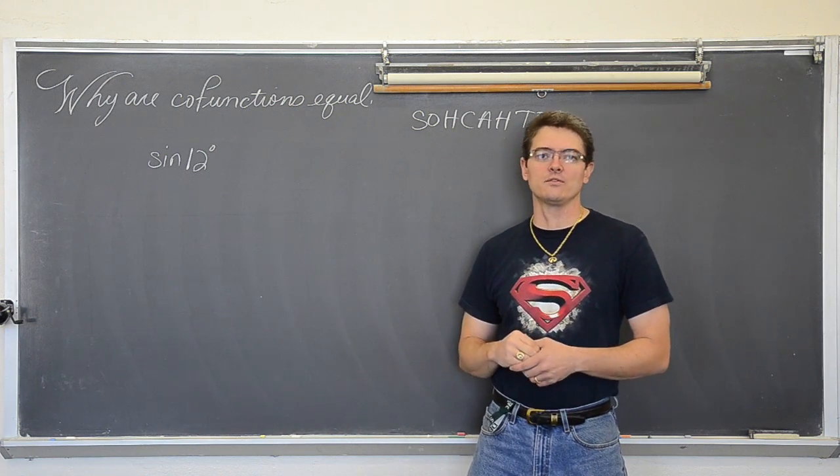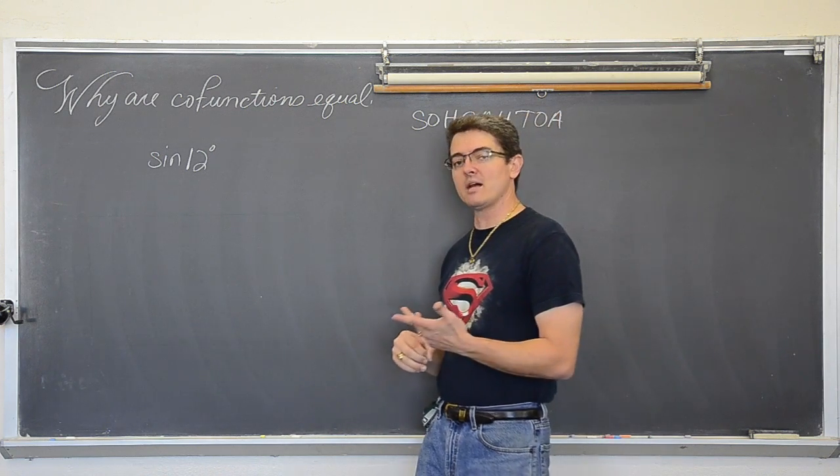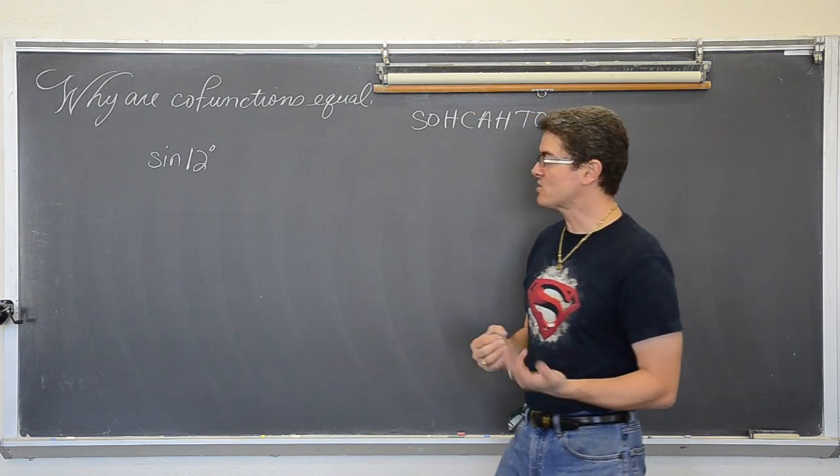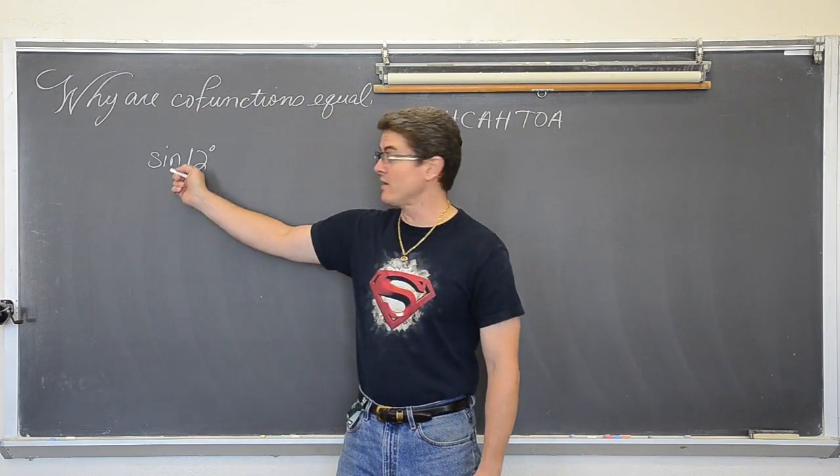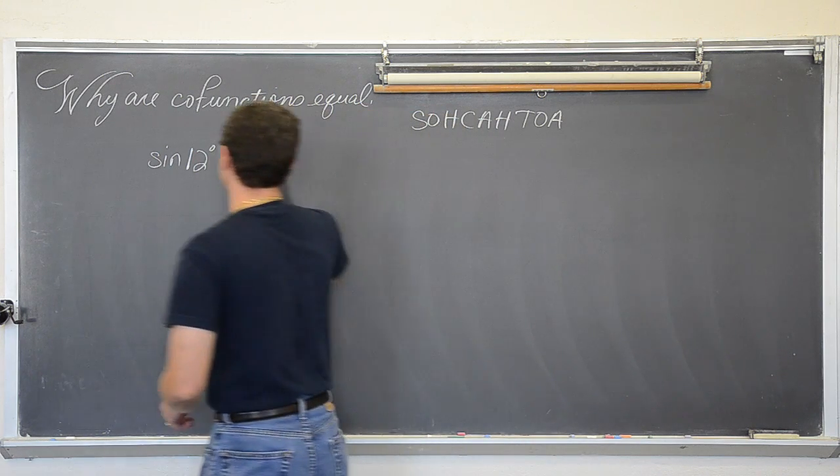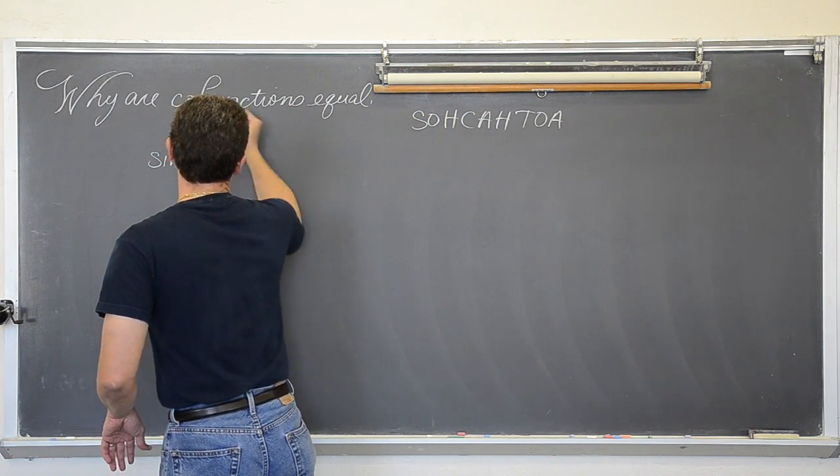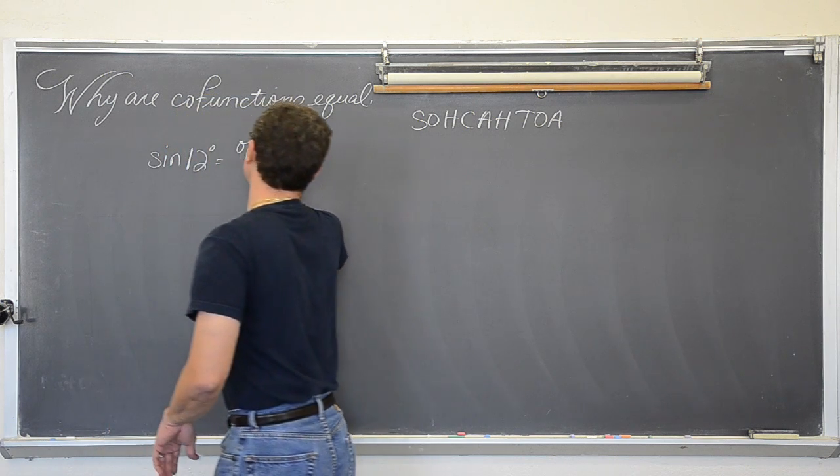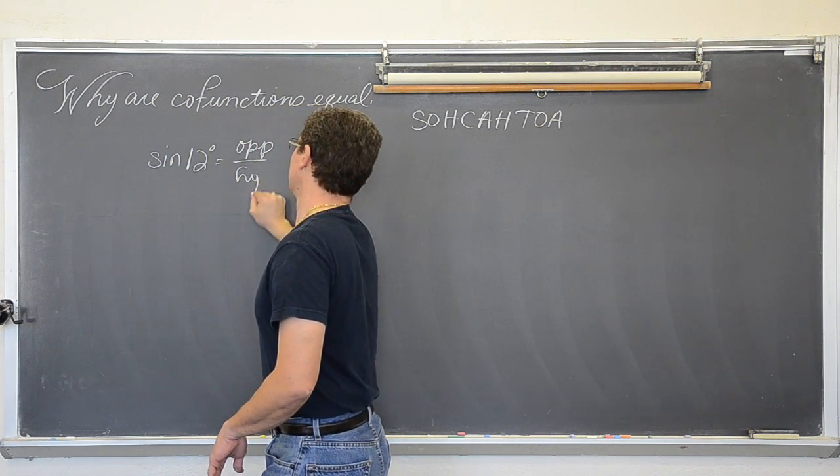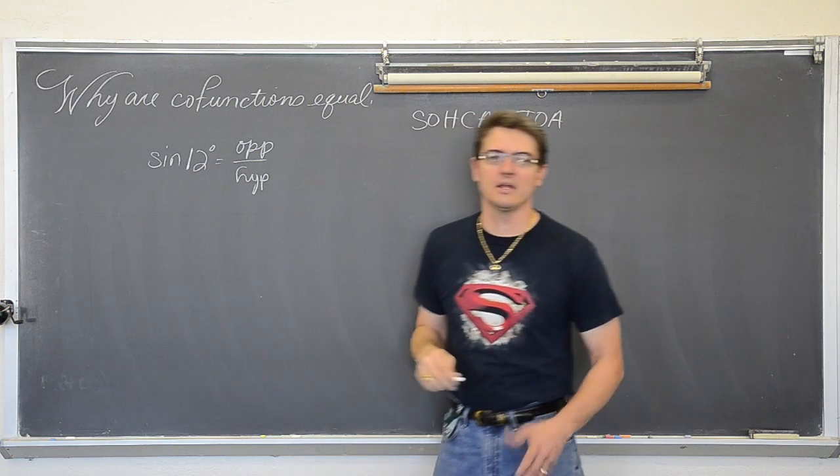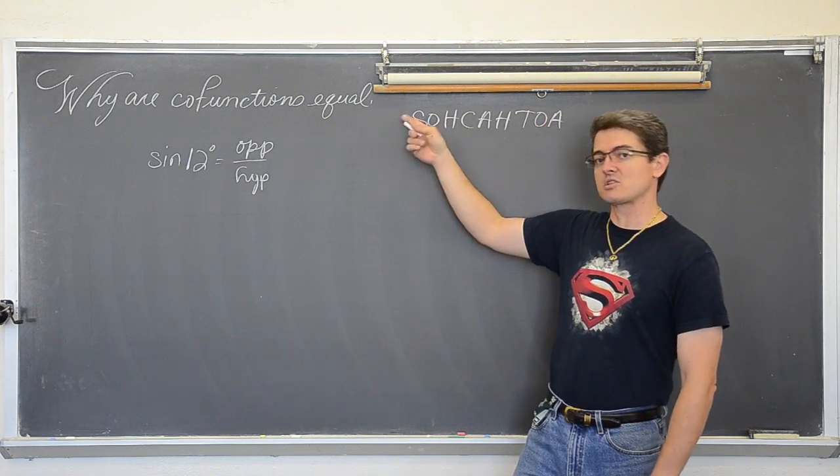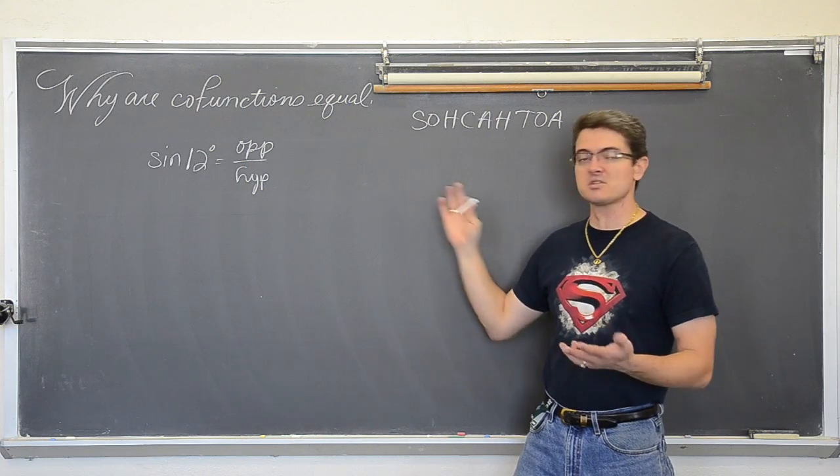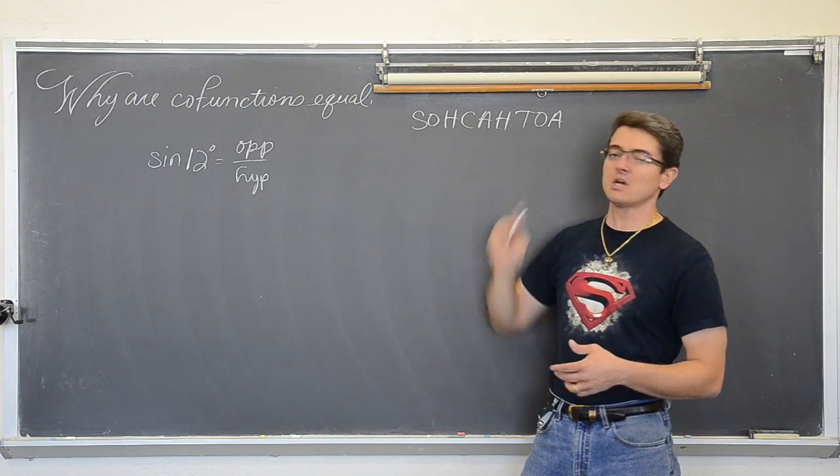But we certainly are, for the vast majority of the studies of trig, talking about right triangles. So when we see the sine of 12 degrees, that must mean that we are talking about a right triangle. Now what do you put into a trig function? You put in an angle measure, whether it is in degrees like this, or radians. And what do you get out of a trig function? You get out the sides of a triangle.